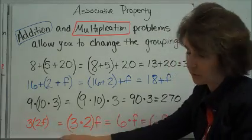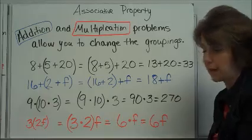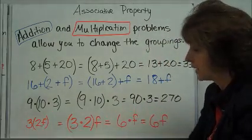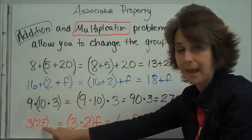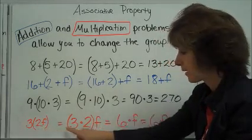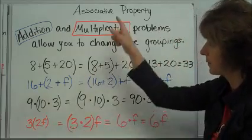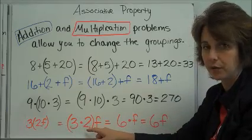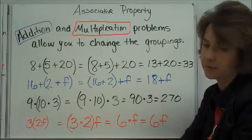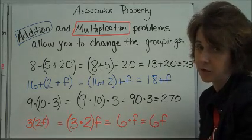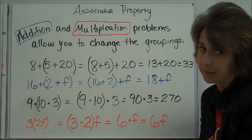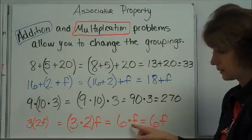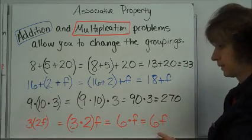Here is a multiplication expression with variables. Remember there are numerous ways to write multiplication — because the 3 is beside the parentheses it means multiply, and because the 2 is right beside the f it means multiply. To use the associative property we change the groups, putting the parentheses around the 3 and the 2. Be sure to include a multiplication sign, because putting two numbers beside each other means 32, not multiply. So 3 times 2 times f equals 6 times f, which is 6f.